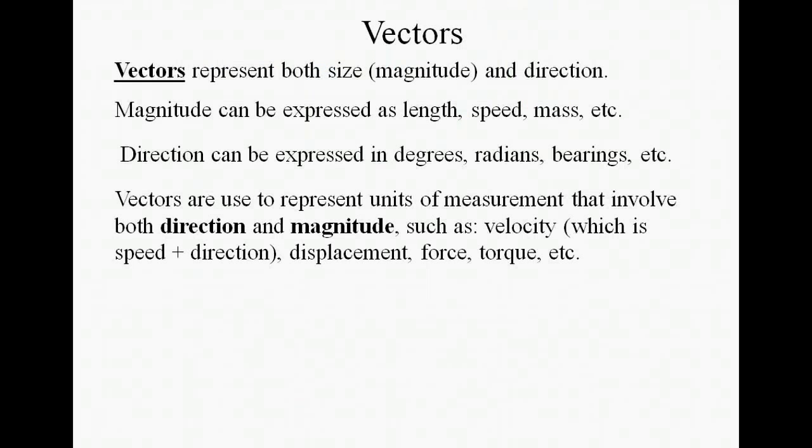Vectors represent both size (magnitude) and direction. The size or magnitude can be expressed as length, speed, or mass, and the direction could be in degrees, radians, or bearings. Since you're representing both of those things, the vectors could be something like velocity, displacement, or force.